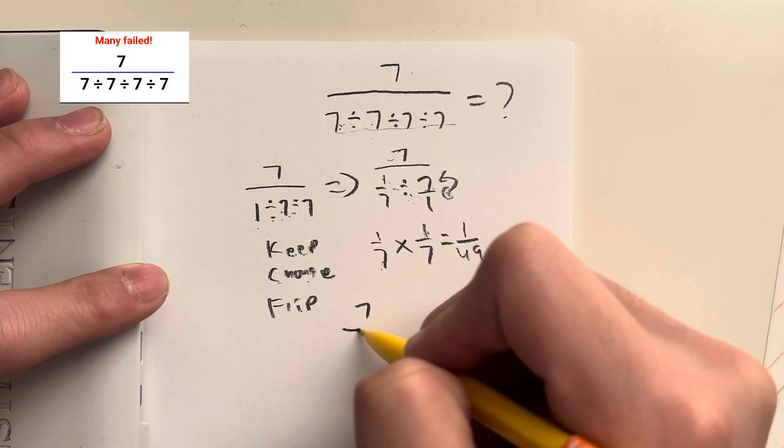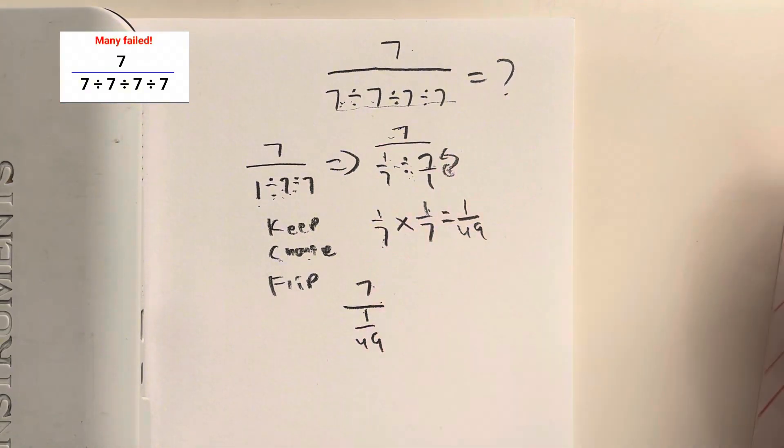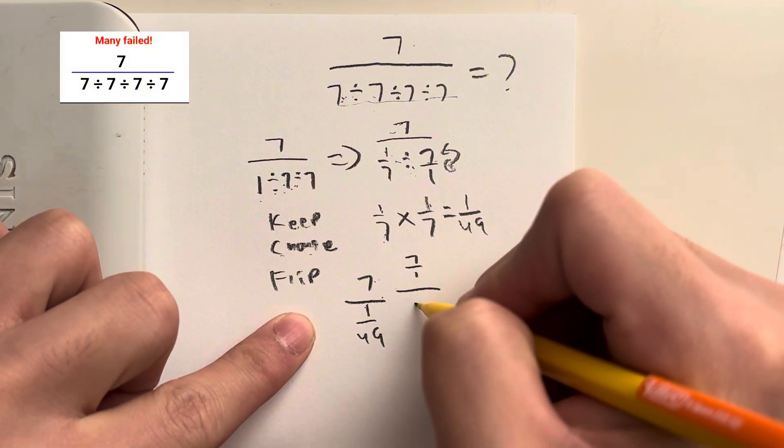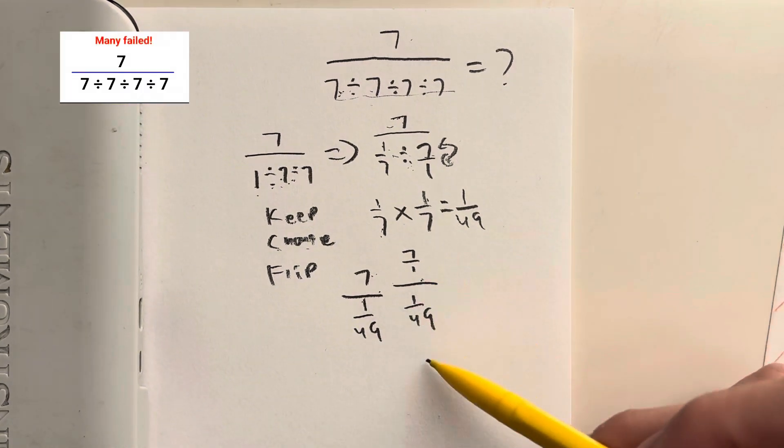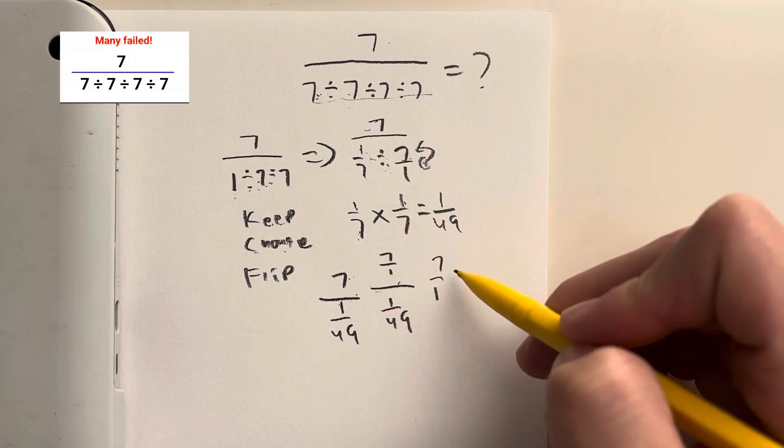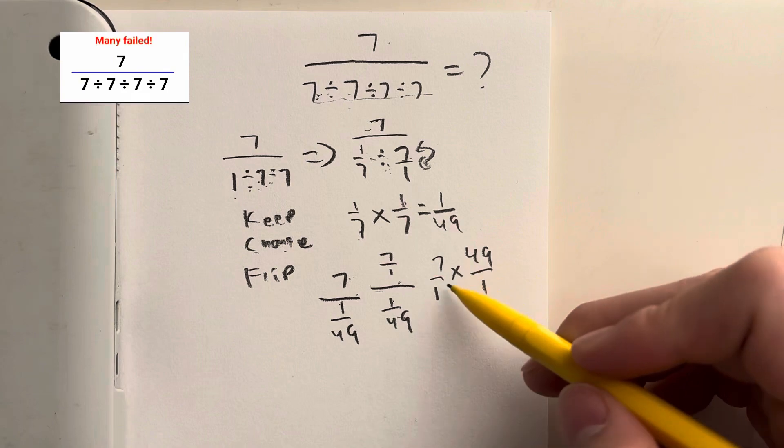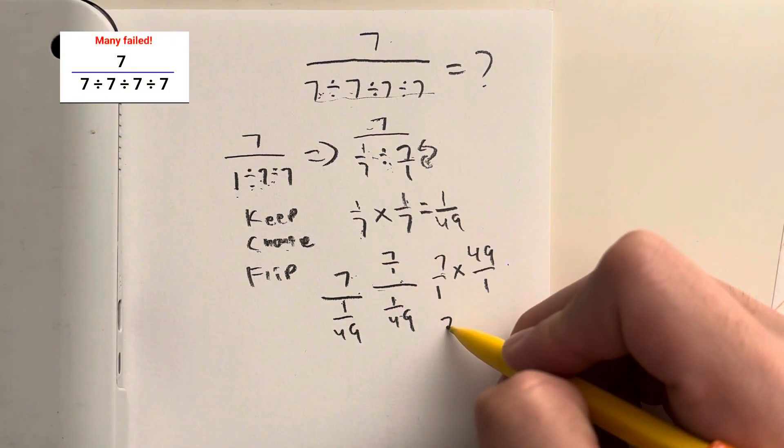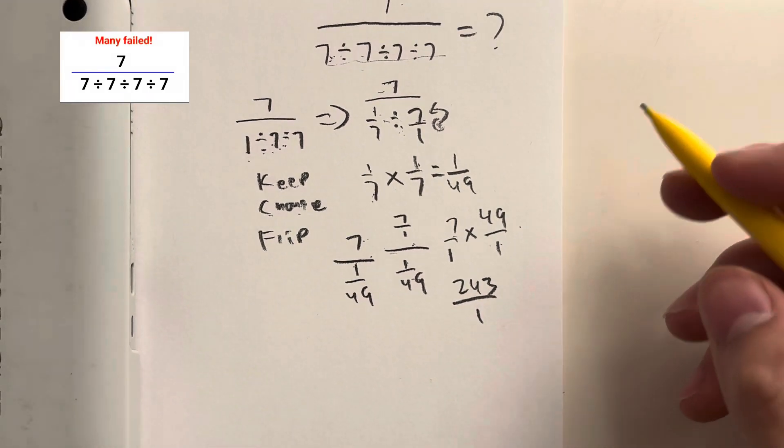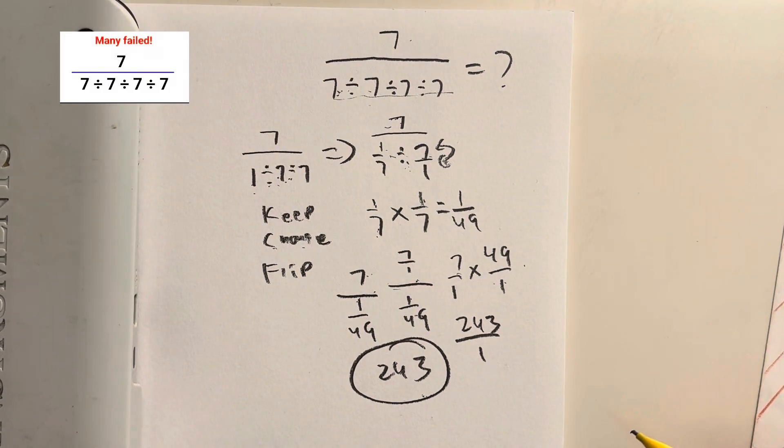So this just becomes 7 over 1 over 49. Same idea, dividing a whole number by a fraction, I'm going to convert this into 7 over 1 divided by 1 over 49. Same idea again, we have to keep change flip, so keep 7 over 1, change from division to multiplication, and flip 1 over 49 to 49 over 1, and then I multiply. 7 times 49 is equal to what? That's equal to 343. On the bottom, 1 times 1 gives me 1. 343 over 1 gives us a final answer of 343. Let me know if you got this one right.